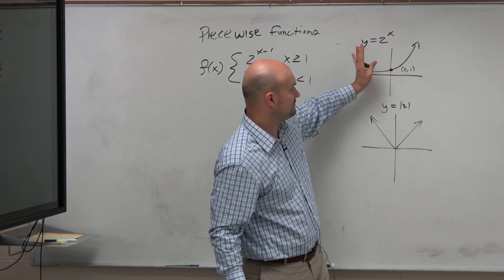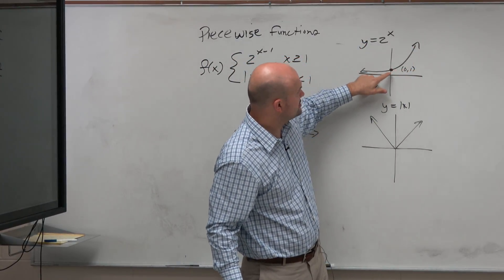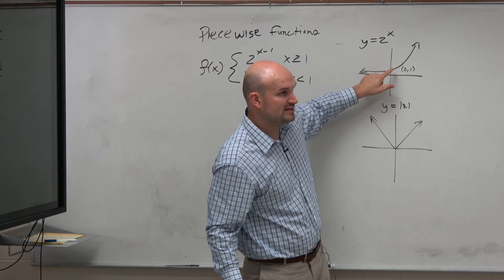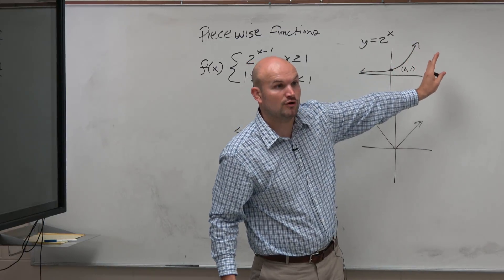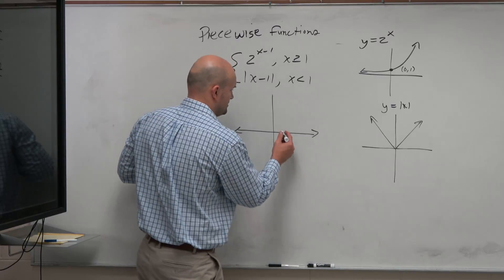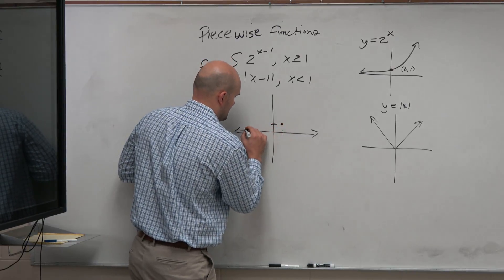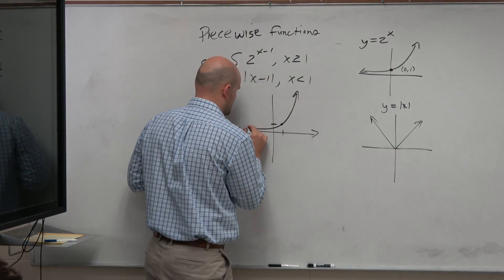So as you guys look at this, you can see that this is being shifted one unit to the right. So if I take this parent graph and shift it one unit to its right, this y-intercept, or this point, which is the y-intercept, is now going to be shifted over to 1 comma 1. So then the graph now looks something like that.